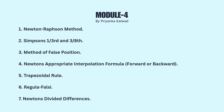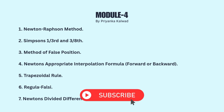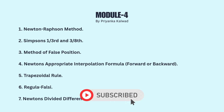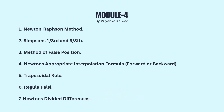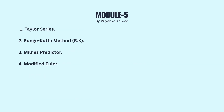Module 4: First, Newton-Raphson method. Second, Simpson's one-third and three-eighth rule. Third, method of false position. Fourth, Newton's interpolation formula — either backward or forward. Fifth, trapezoidal rule. Sixth, Regula Falsi. Seventh, Newton's divided differences.